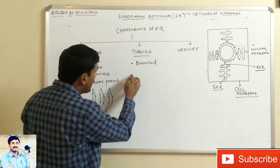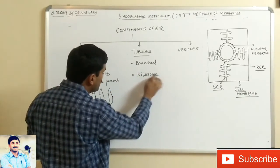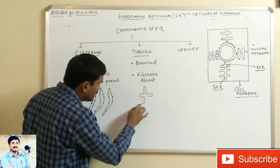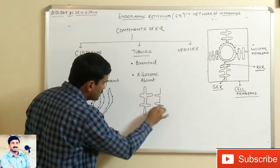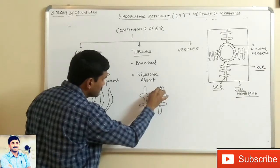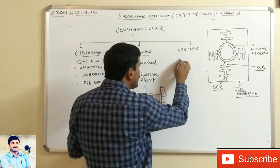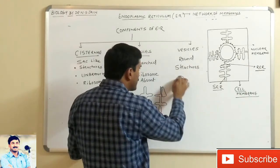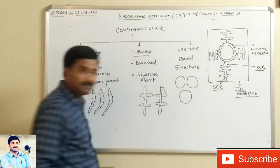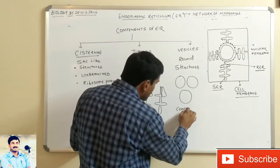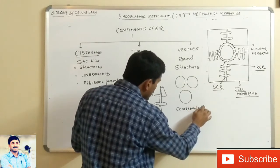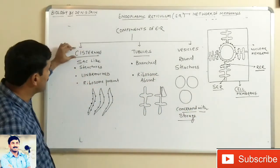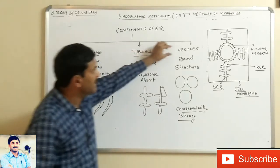Tubules are branched with no ribosomes present on them. The third component is vesicles, which are round structures concerned with storage. These are the three components of the ER: cisternae, tubules, and vesicles.